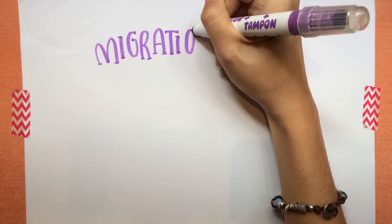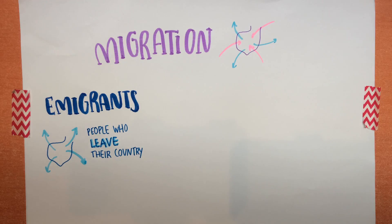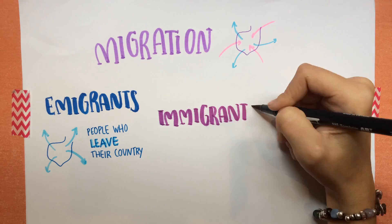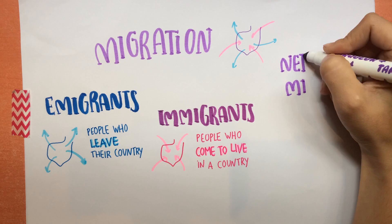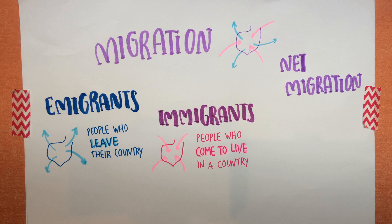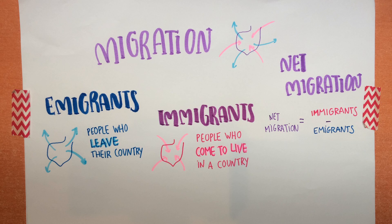Let's explain now migration. Migration refers to people who move from one country to another. There are two types. Emigrants are people who leave their country to live in another one. And emigrants are people who come to live in a new country. The difference between the number of emigrants and the number of emigrants is called net migration. To calculate the net migration of a place we need to subtract the number of emigrants from the number of emigrants.